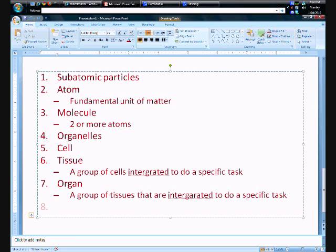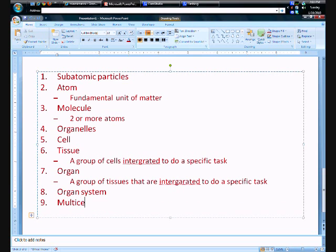What do a bunch of organs make? You might say a body, but think of a bit before that - it makes an organ system. So a group of organs integrated to do a specific task, or an organ system. Next, number nine - a bunch of organ systems make a multicellular organism.